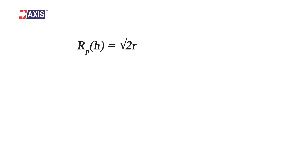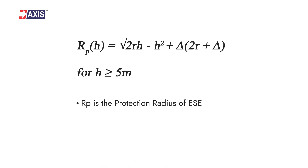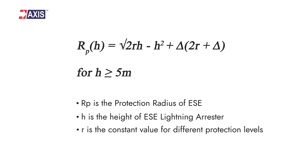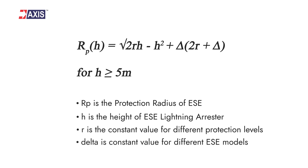Finally, coming towards the calculation of the coverage area. Here is the formula for calculating the coverage area. In this formula, Rp is the protection radius of the ESC, H is the height of the ESC, R is the constant value for different levels of protection derived from the NFC standard, and delta is the constant value for different ESC models. This value is given by the ESC manufacturer based on the lightning strike carrying capacity of the arrester.